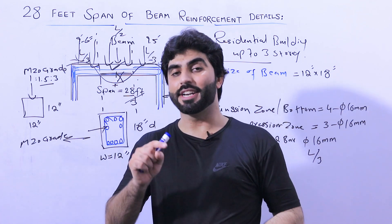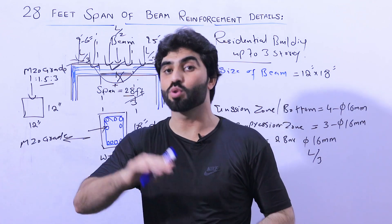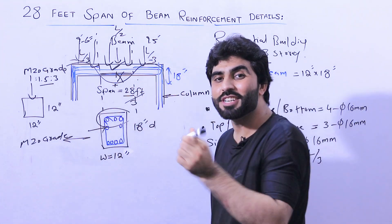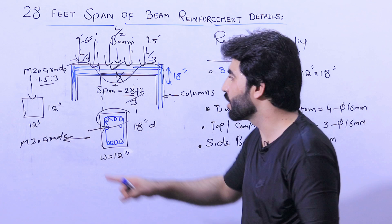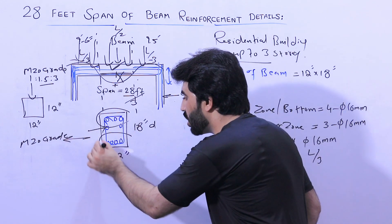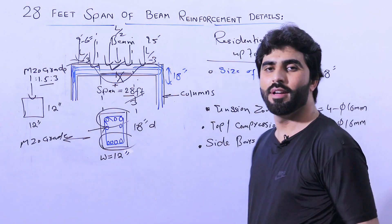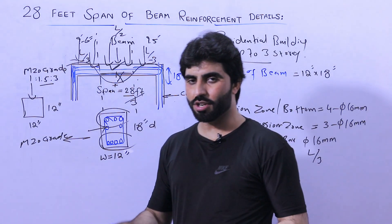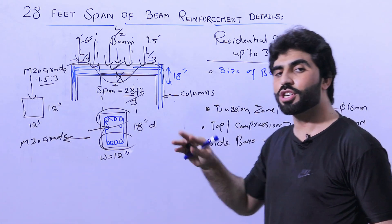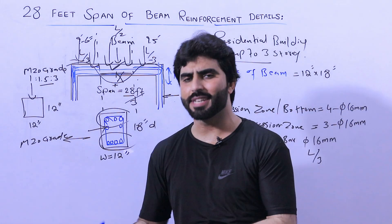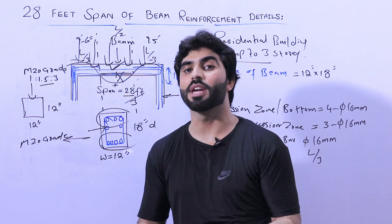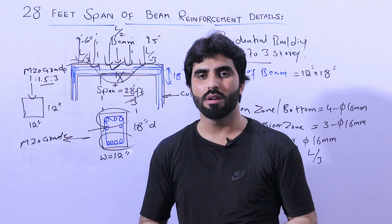Concrete is weak in tension but strong in compression. Therefore, in the compression zone I provided 3 steel rods, and in the tension zone I provided 4 steel rods — maximum bars at the bottom and minimum at the top. The diameter of top reinforcement can be decreased, but the diameter of bottom reinforcement should be increased because it is weak in tension.